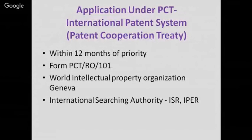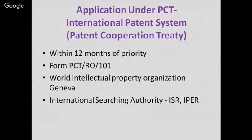A conventional application can be filed within 12 months directly in any conventional country. For international filing, the Patent Cooperation Treaty (PCT) was established under the Paris Convention. After filing a patent application in your own nation or territory, within 12 months you can apply for international patent. Under PCT, with around 151 member countries, it is possible to seek patent protection simultaneously in many countries by filing a single international patent application instead of filing in different countries separately.